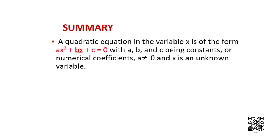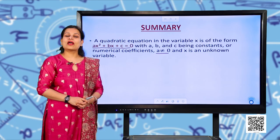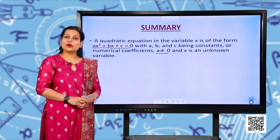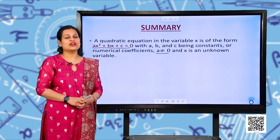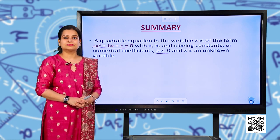Let us quickly recapitulate what we have studied today. A quadratic equation in the variable x is of the form ax² + bx + c = 0, with a, b and c being constants or numerical coefficients. Remember: a ≠ 0 and x is any unknown variable. I hope you have understood the concept of how to check whether an equation is a quadratic equation or not. Thank you.